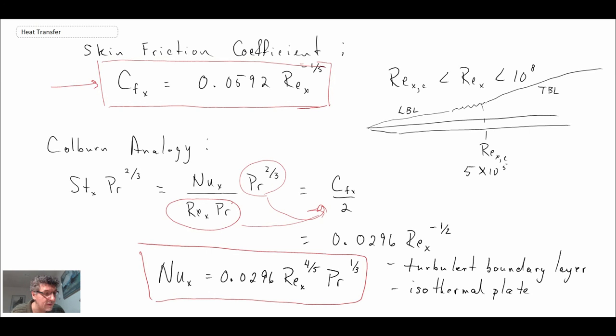So cylinders, spheres, things like that. And then after that we'll be looking at tube bundles. So multiple cylinders arranged in various patterns. So that's where we're going for external forced convection flows.